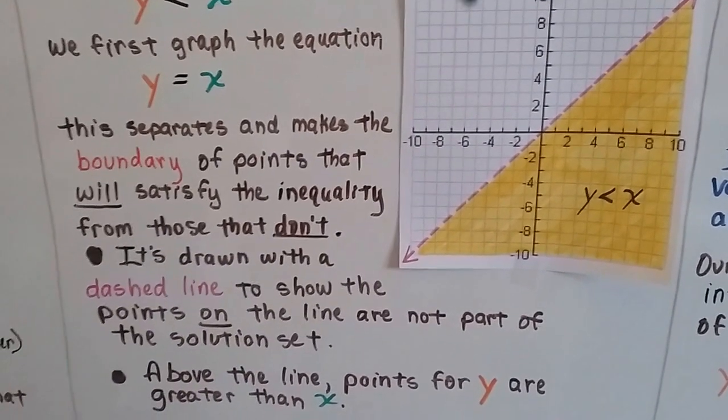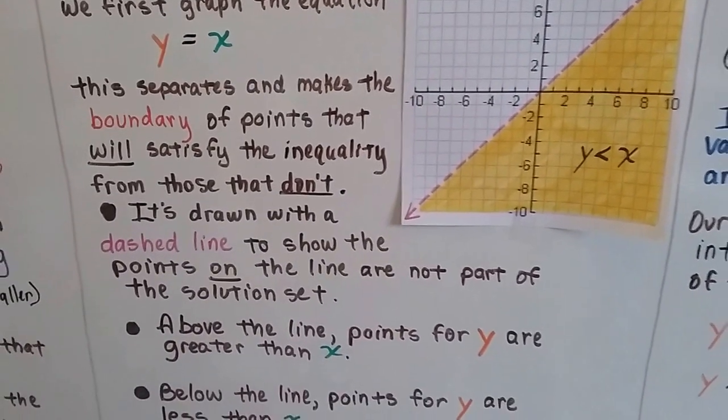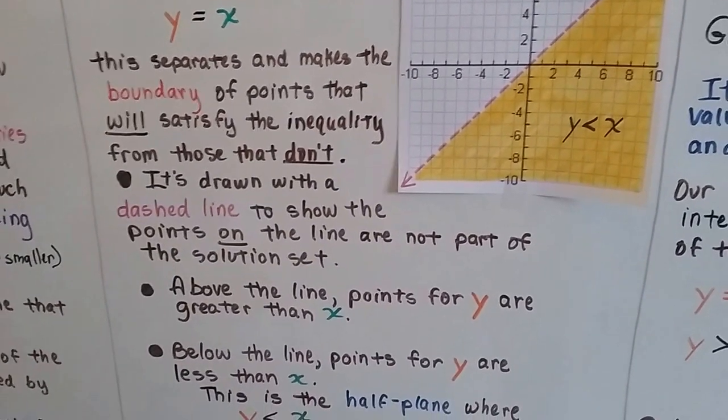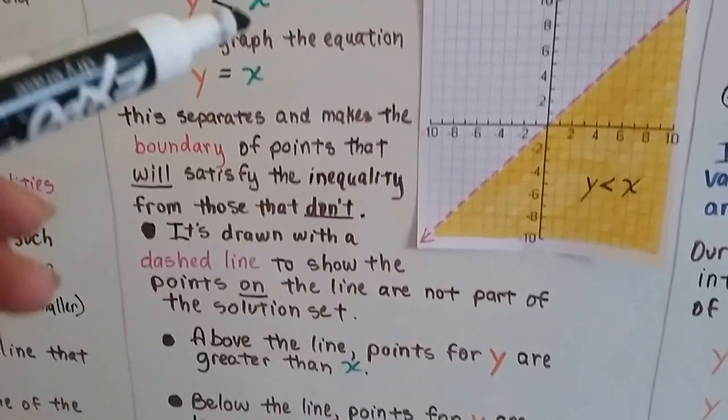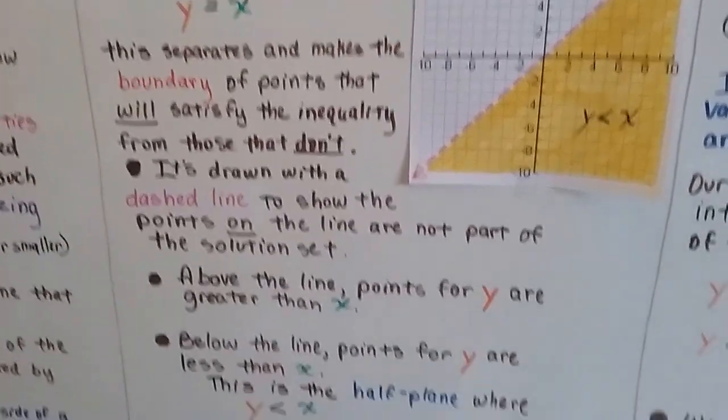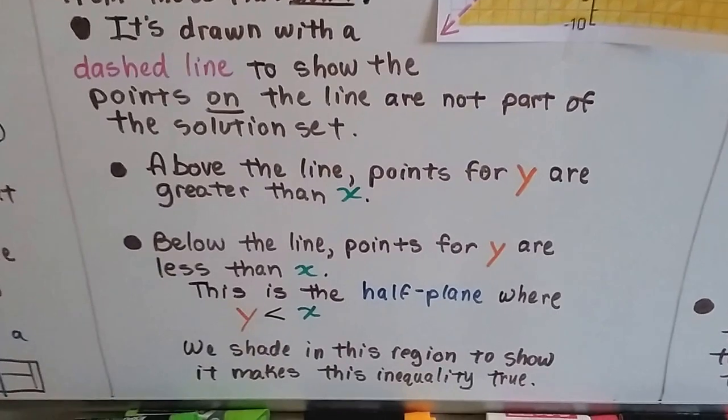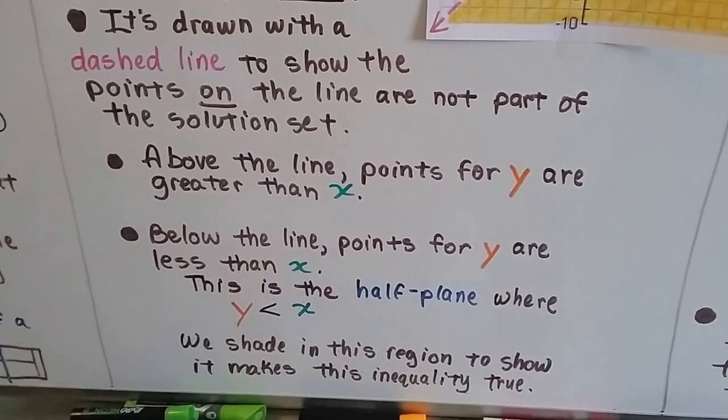Above the line, the points for y are greater than x. Below the line, the points for y are less than x, and since that's what we were trying to find, it makes it true. We shade in this region to show it makes the inequality true.